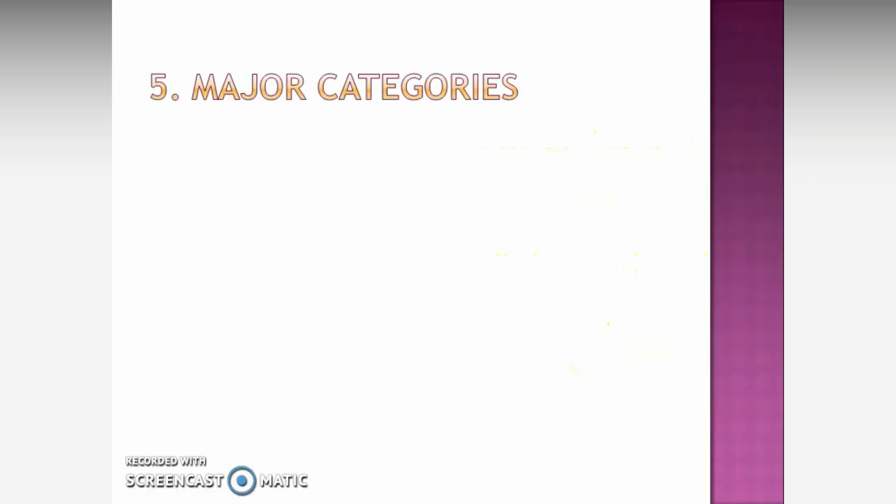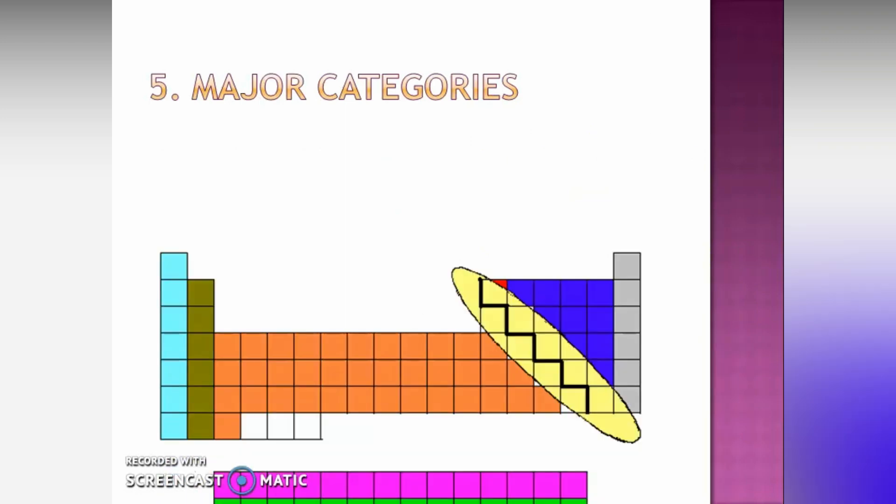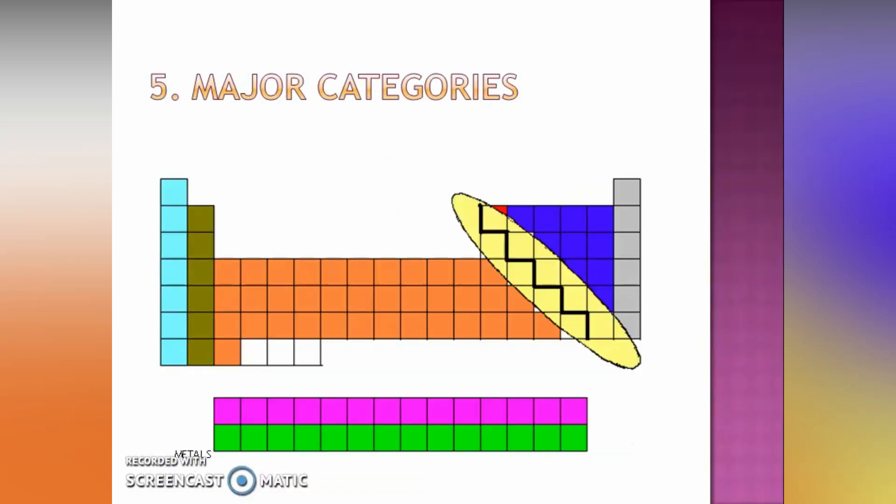Now, the major categories on the periodic table. The periodic table will have the first two broad groups called metals. You can see the first color and the second color. So, they are all called metals.